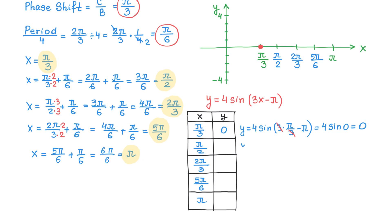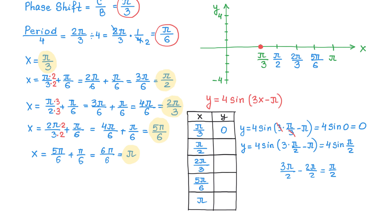To find the next y-coordinate, we replace x with pi over 2: y equals 4 sine of 3 times pi over 2 minus pi. In the parenthesis, getting a common denominator gives 3 pi over 2 minus 2 pi over 2, which makes pi over 2. Then we have 4 times sine of pi over 2. Sine of pi over 2 is 1, and 4 times 1 is 4. So the second y-coordinate is 4.